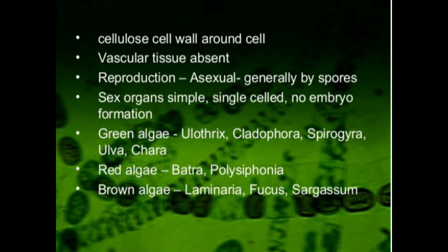Regarding reproduction in Thallophyta: asexual reproduction generally takes place by spores. The reproductive organs are simple and single-celled, and there is no embryo formation. They may be filamentous, colonial, branched, or unbranched.